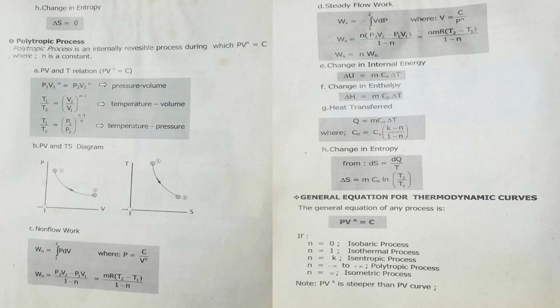Another process is the polytropic process. Polytropic process is an internally reversible process during which pressure times volume raised to N equals constant, where N is a constant. The PV relation is P1V1 raised to N equals P2V2 raised to N. Temperature-volume relation: T1 over T2 equals quantity V2 over V1 raised to N minus 1. Temperature-pressure relation: T1 over T2 equals P1 over P2 raised to N minus 1 over N.